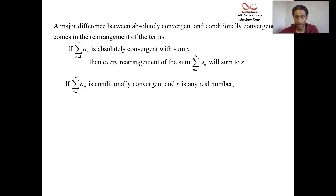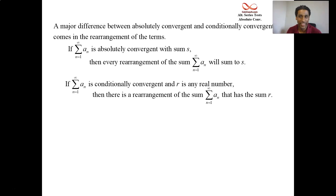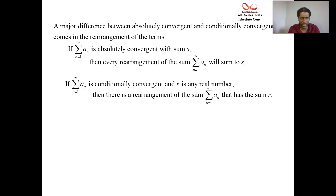You give me any real number, and I can rearrange the terms some kind of way to equal that number. It's ridiculous — it's weak. Absolute convergence is strong: you rearrange it, but you get the same sum. Conditional convergence is weak: you rearrange it, you can get another number.